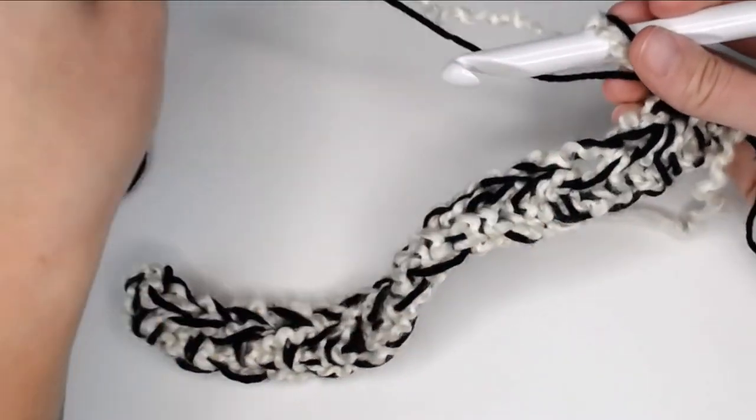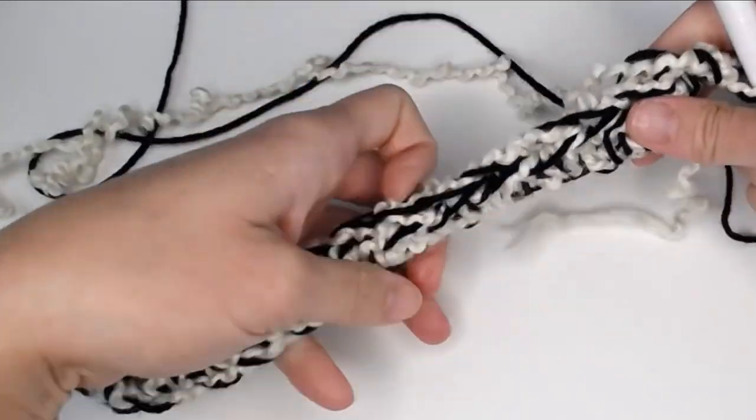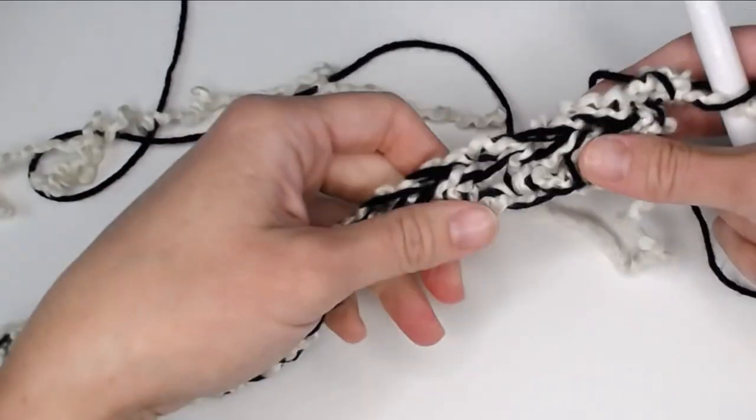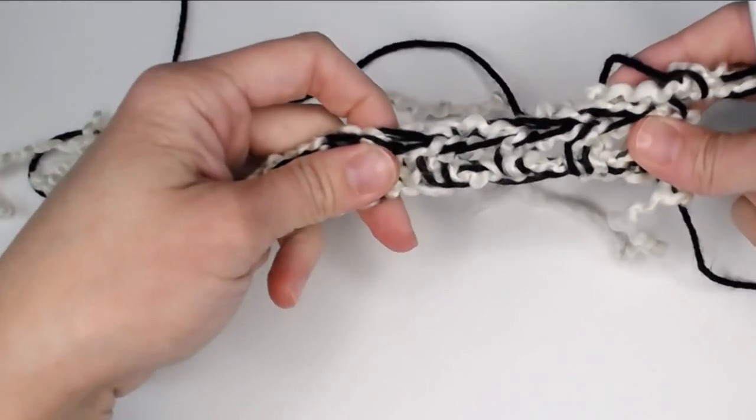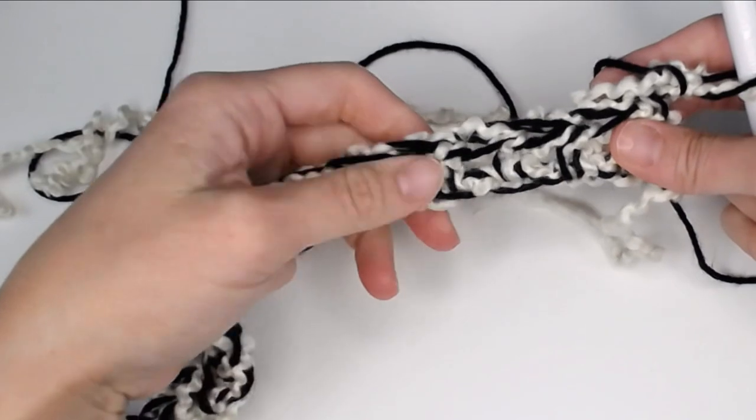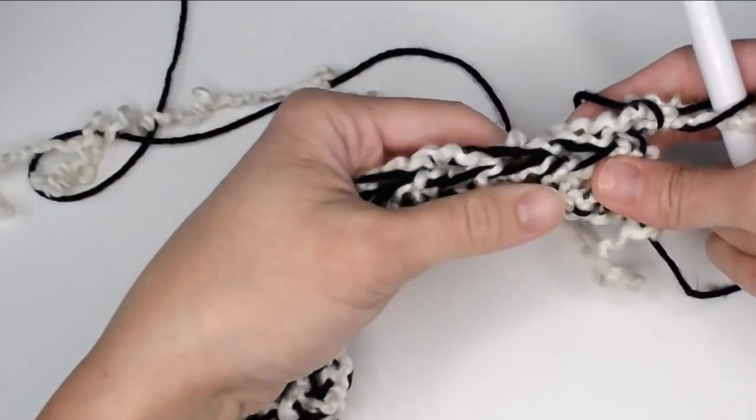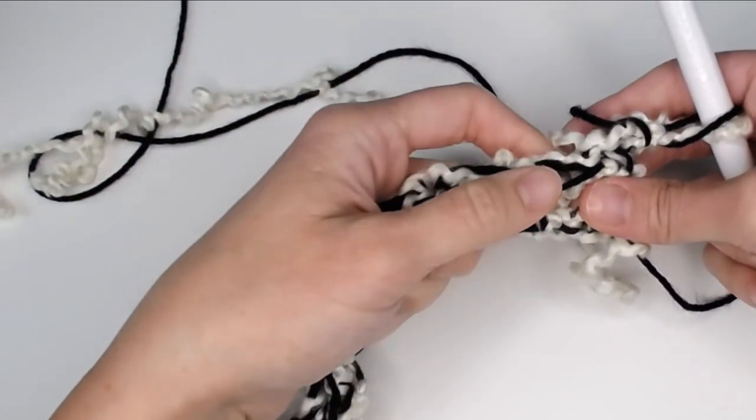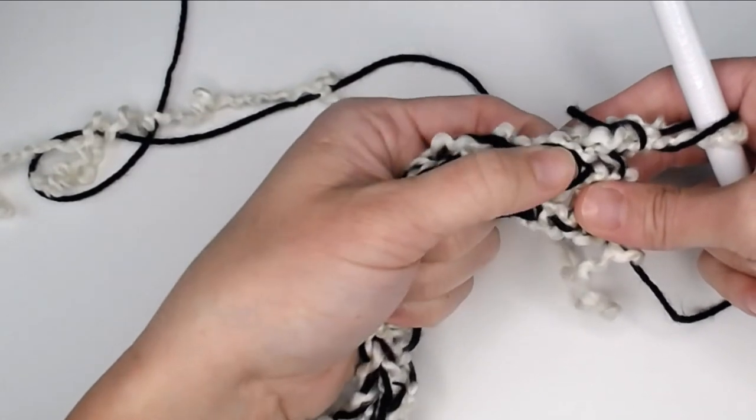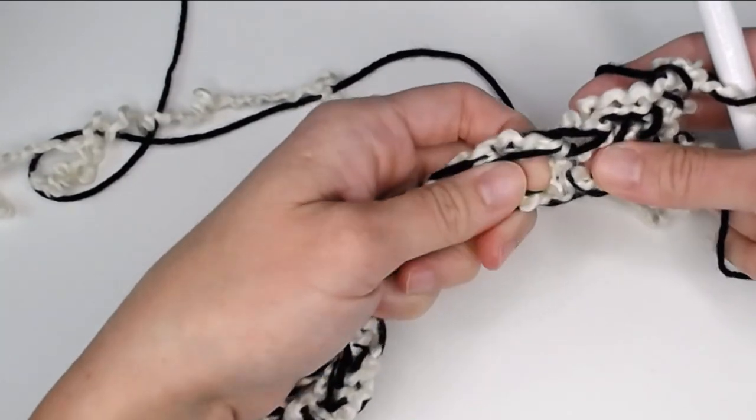Right there, that's our next stitch. If you are still having trouble finding your stitches, another trick that you can use is just pull your work a little bit and look for the half double crochets. So there's a half double crochet. Perfect! There's the top of it. That's where my stitch is.